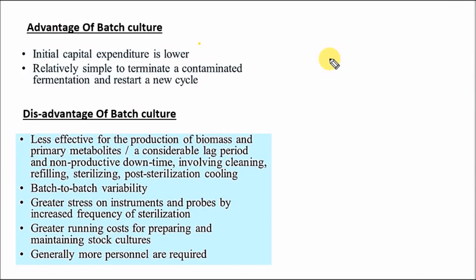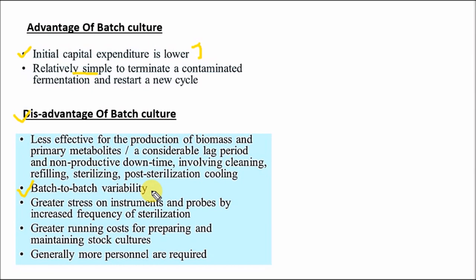There are some advantages and disadvantages of batch culture. Advantages: initial capital expenditure is very low, and it is relatively simple with low contamination risk. Disadvantages: it is less effective for the production of biomass or primary metabolites; there is batch-to-batch variability due to low control over environmental parameters like temperature and pH; greater stress on instruments and probes increases the frequency of sterilization; running cost is very high; and generally more labor is required.